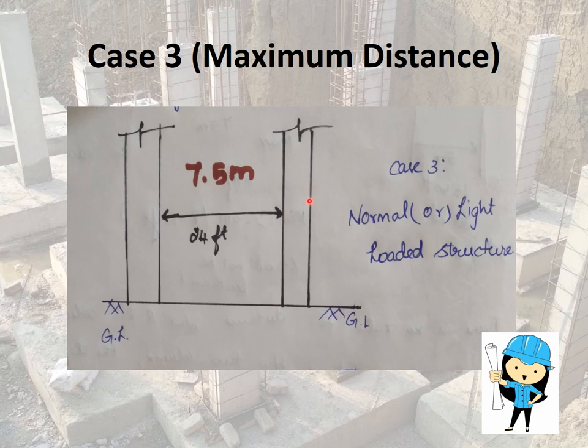How can we decide the load and the distance? If the load of the building is increased, column size also increases. If the column size increases, definitely the distance between the two RCC columns should be increased.